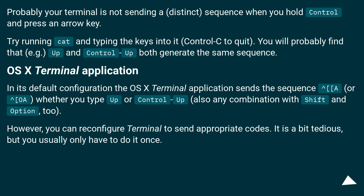OS X Terminal Application: In its default configuration, the OS X Terminal application sends the sequence A or O whether you type Up or Control+Up, also any combination with Shift and Option too.